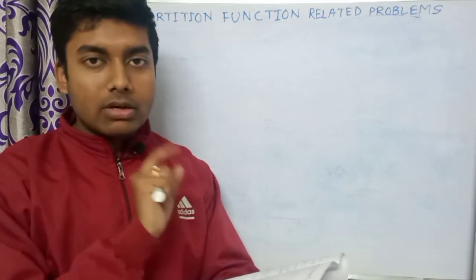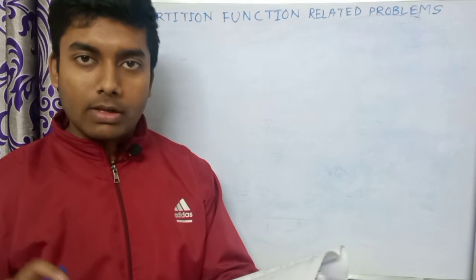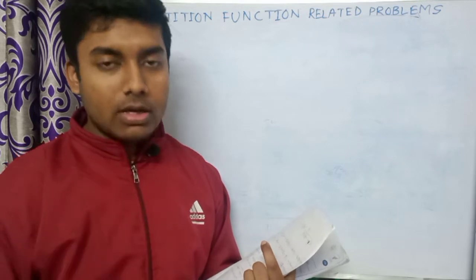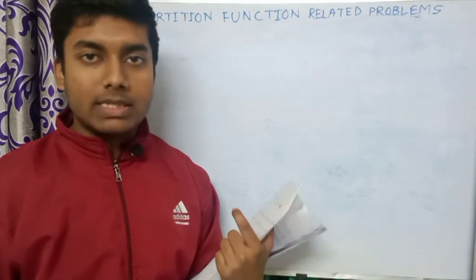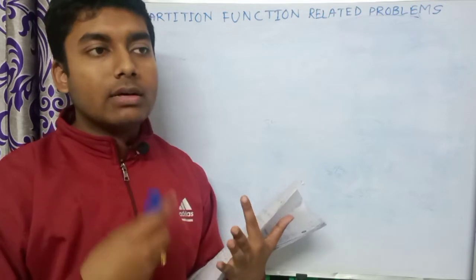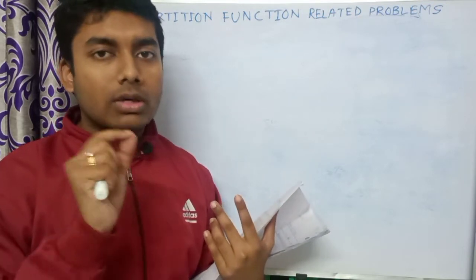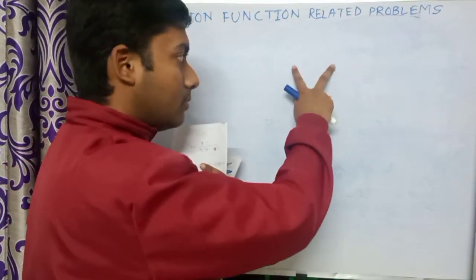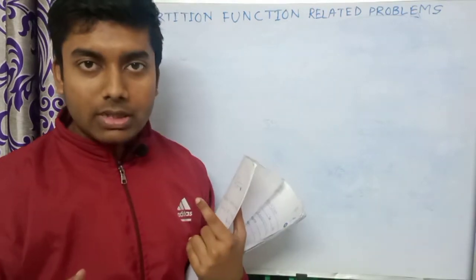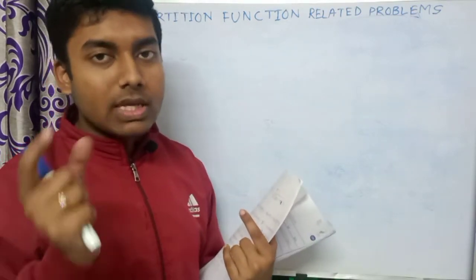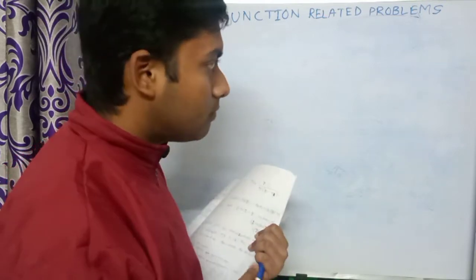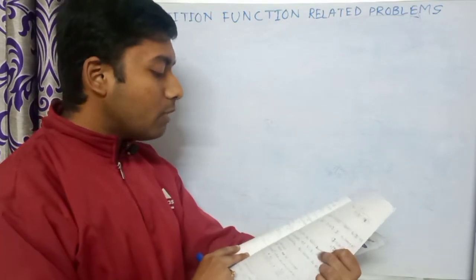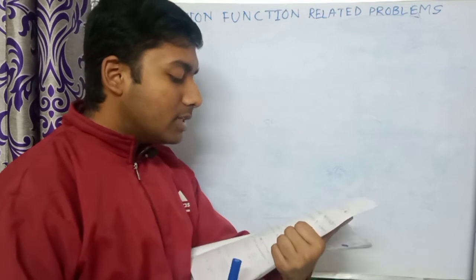The problems discussed here are valid for Maxwell-Boltzmann distribution or Maxwell-Boltzmann statistics. In fermion statistics and Bose-Einstein statistics, to find the distribution or probability, we first have to write the arrangements, because in those cases the particles are indistinguishable. I will discuss those things in the next videos. In this problem, we have to find the total energy of the most probable distribution.